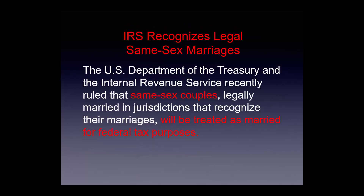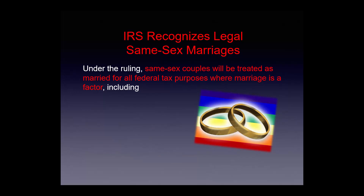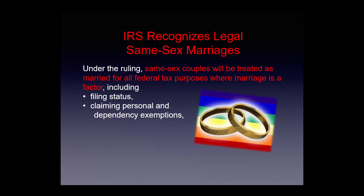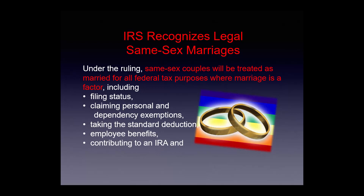The IRS now recognizes legal same-sex marriages. The U.S. Department of the Treasury and the IRS ruled that same-sex couples legally married in jurisdictions that recognize their marriages will be treated as married for all federal tax purposes — including filing status, personal and dependency exemptions, standard deduction, employee benefits, IRA contributions, and claiming the earned income tax credit or the child tax credit.